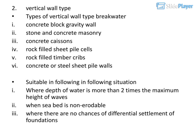Vertical wall type breakwater: Types include concrete block gravity wall, stone and concrete masonry, concrete caisson, rock-filled sheet pile cells, rock-filled timber cribs, and concrete or steel sheet pile walls. Suitable where depth of water is more than two times the maximum height of waves, when the seabed is non-erodible, and where there are no chances of differential settlement of foundations.